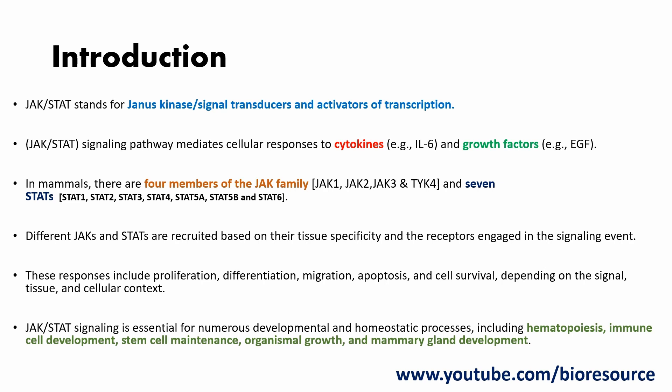In mammals, there are 4 members of the JAK family: JAK1, JAK2, JAK3, and TYK2, and 7 STATs. The different JAKs and STATs are recruited based on their tissue specificity and the receptor engaged in the signaling event.